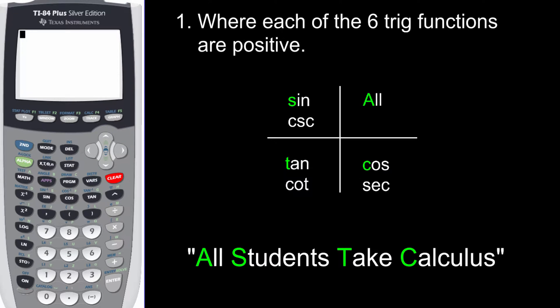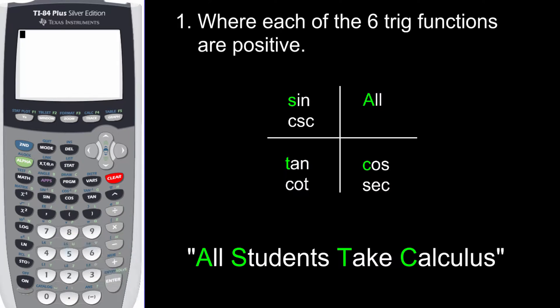Now knowing where each of the six trig functions are positive — a lot of times you'll hear a mnemonic: All Students Take Calculus. Now in each of those quadrants, the reciprocal functions of sine, cosine, and tangent are also going to be positive. So you're gonna have to make sure that you know where each of the six trig functions are positive.